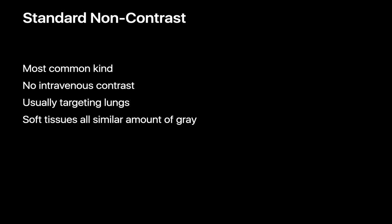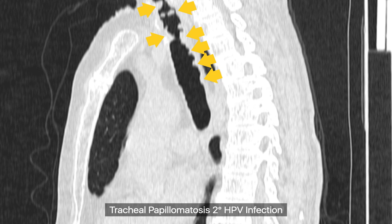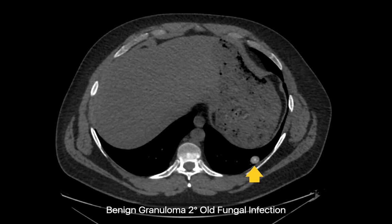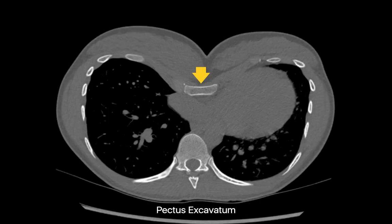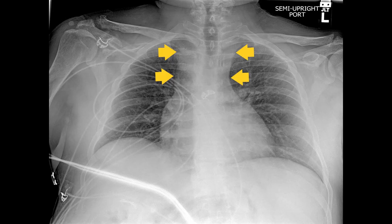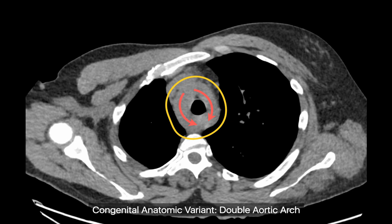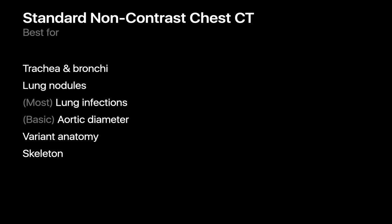Standard non-contrast chest CTs are great for assessing the airways, like in a case of tracheal papillomatosis, assessing lung masses like a mycetoma, assessing lung nodules like a left lower lobe granuloma, and measuring the severity of pectus excavatum involving the ribcage. And even though soft tissue structures may all appear in similar shades of gray on non-contrast CT, that doesn't mean we can't look at the shape and contours of anatomy to diagnose findings like a double aortic arch in a patient with mediastinal fullness on chest x-ray. So standard non-contrast chest CT is usually good for characterizing airways, lung nodules, lung infections, basic aortic diameter measurements, variant anatomy, and the thoracic cage.